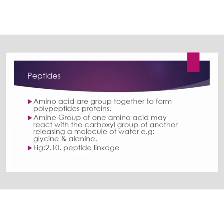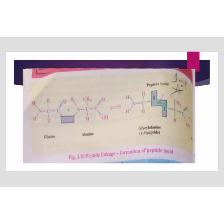Next, we have peptides. Amino acids are grouped together to form polypeptides and proteins. The amine group of one amino acid may react with the carboxyl group of another, releasing a molecule of water — for example, glycine and alanine forming glycyl-alanine. Figure 2.10 in our book shows this peptide linkage, illustrating where the peptide bonds are formed.